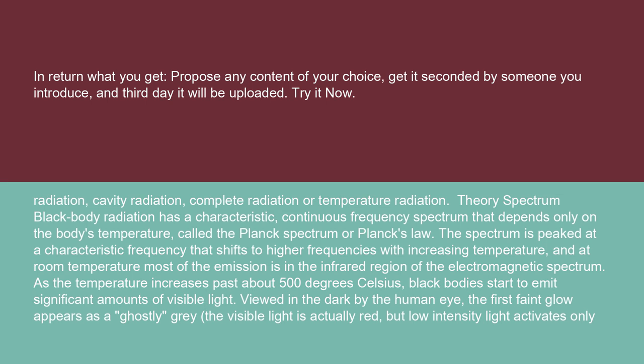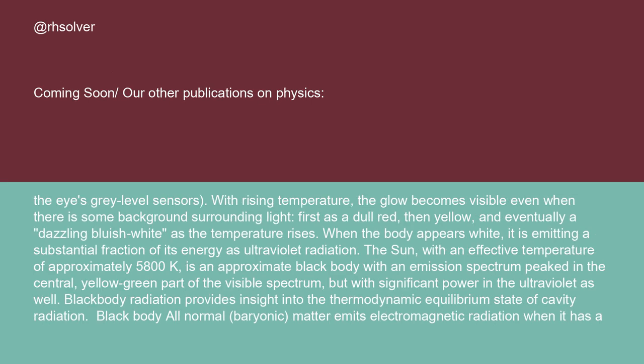As the temperature increases past about 500 degrees Celsius, black bodies start to emit significant amounts of visible light. Viewed in the dark by the human eye, the first faint glow appears as a ghostly gray. The visible light is actually red, but low-intensity light activates only the eyes' gray level sensors.